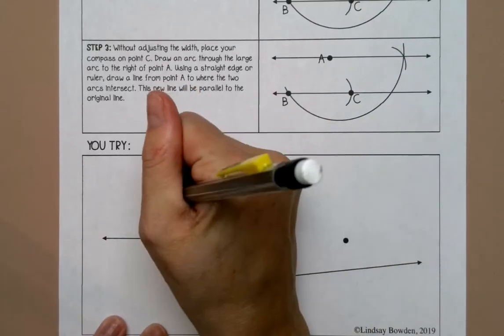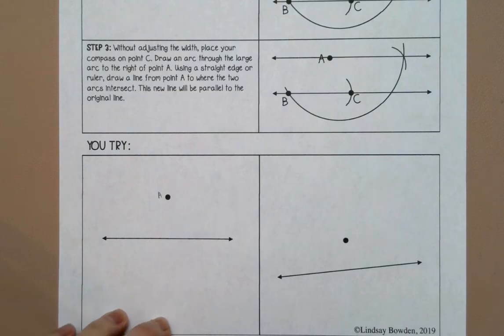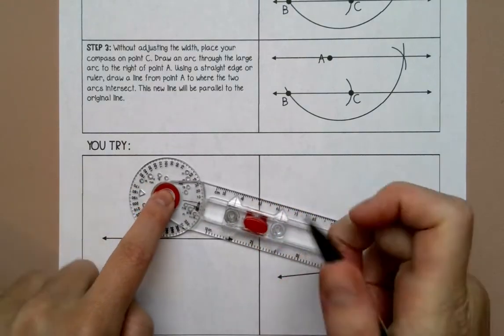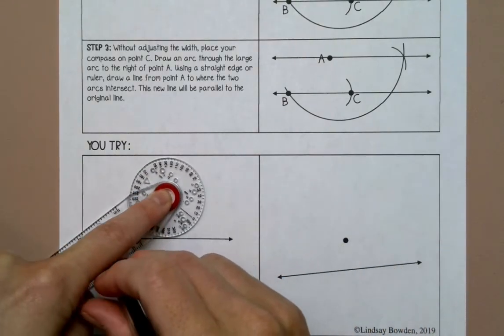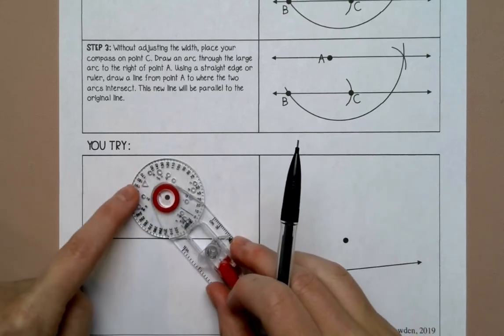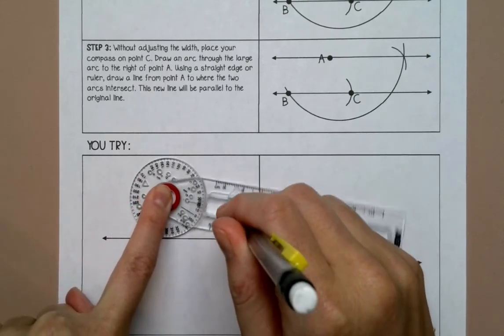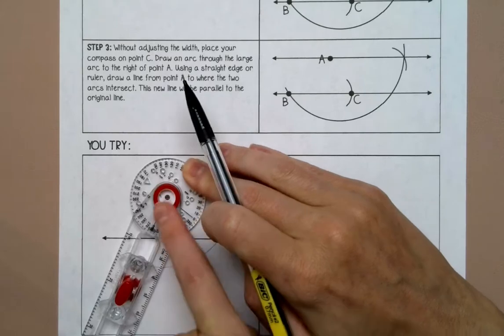I'm going to label this A. I'm going to set my compass width so that when I draw a big arc it'll go through the line twice. You may have to pick up your finger here.